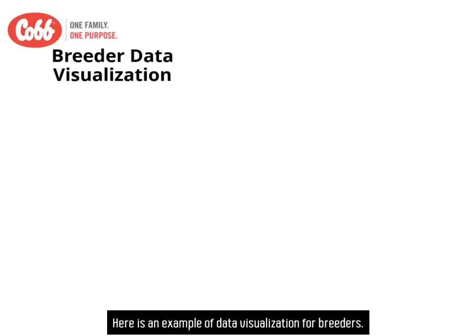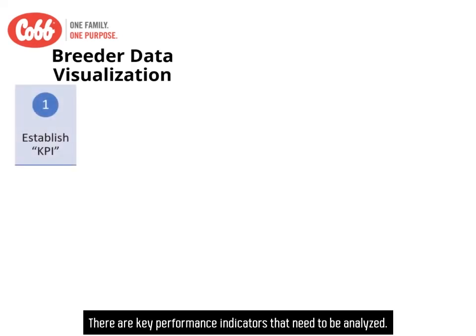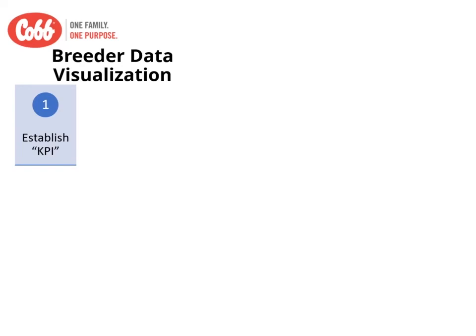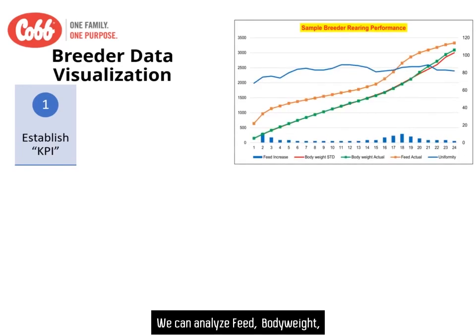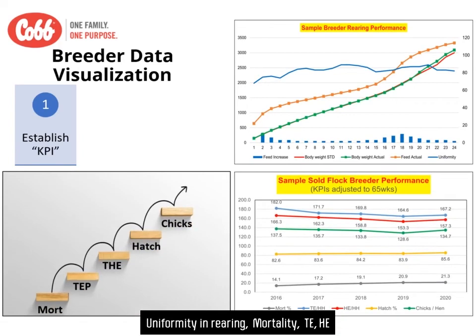Here is an example of data visualization for breeders. There are key performance indicators that need to be analyzed. We can analyze feed, body weight, uniformity in rearing, mortality, total eggs, hatching eggs, hatchability, and brooder house performance in production.